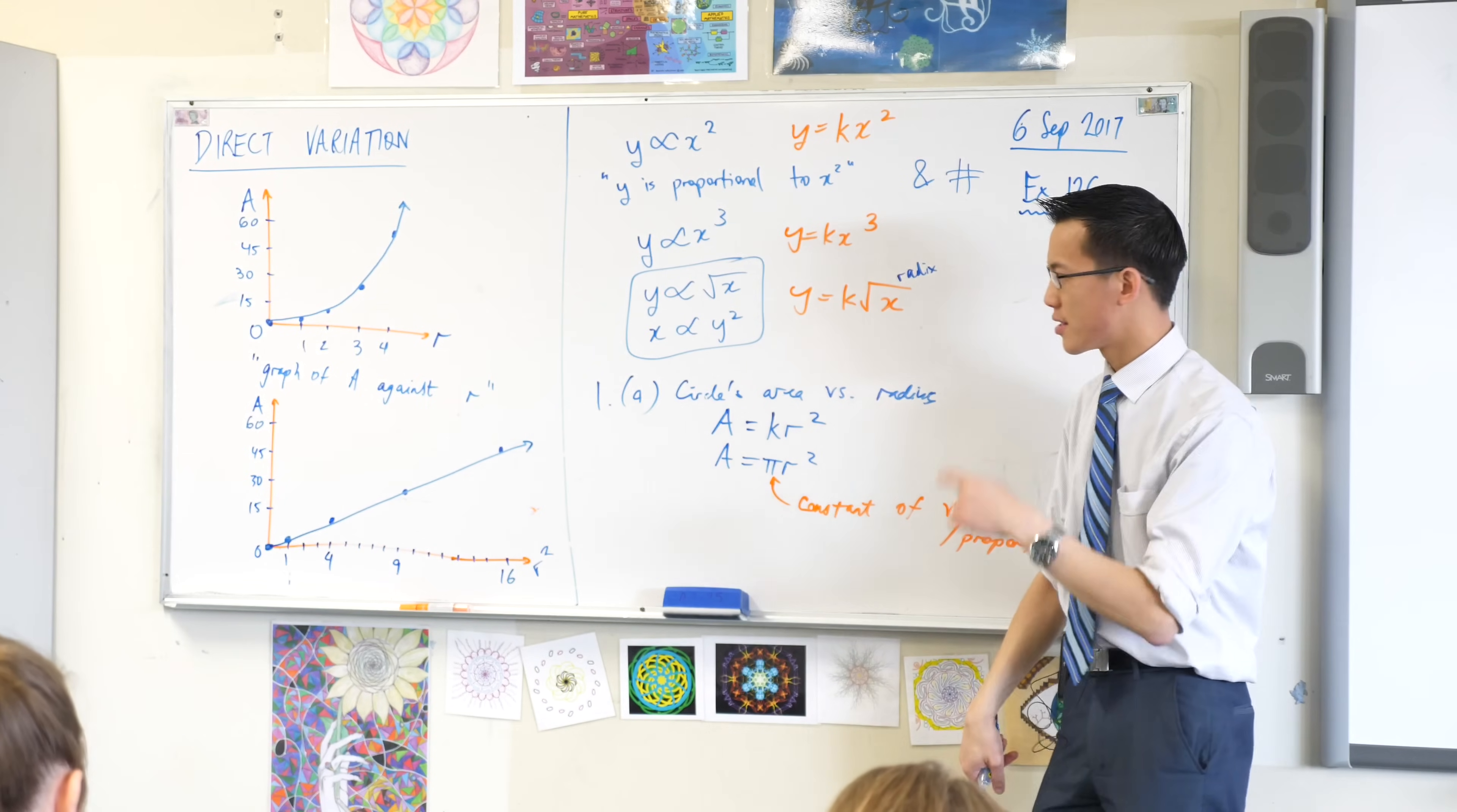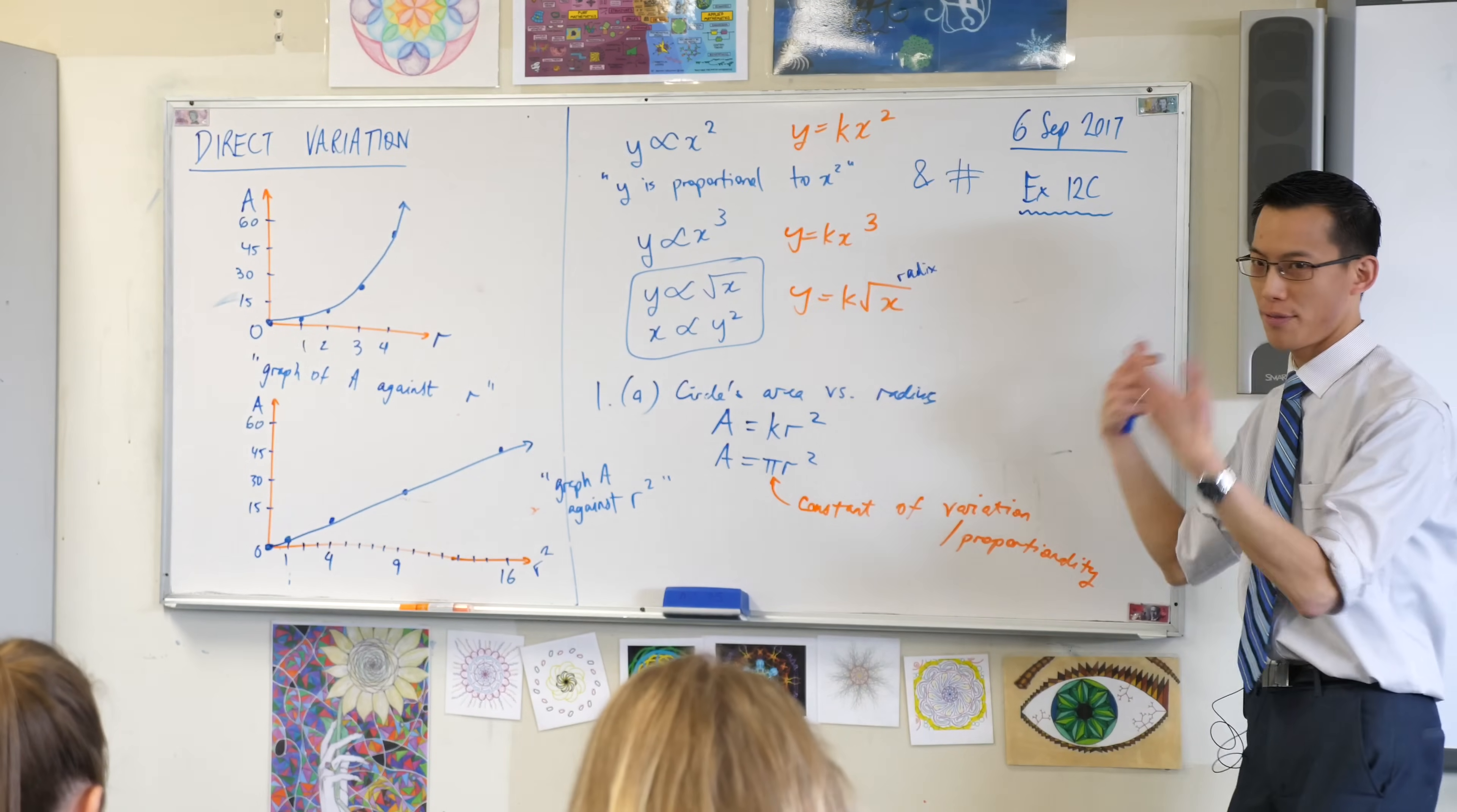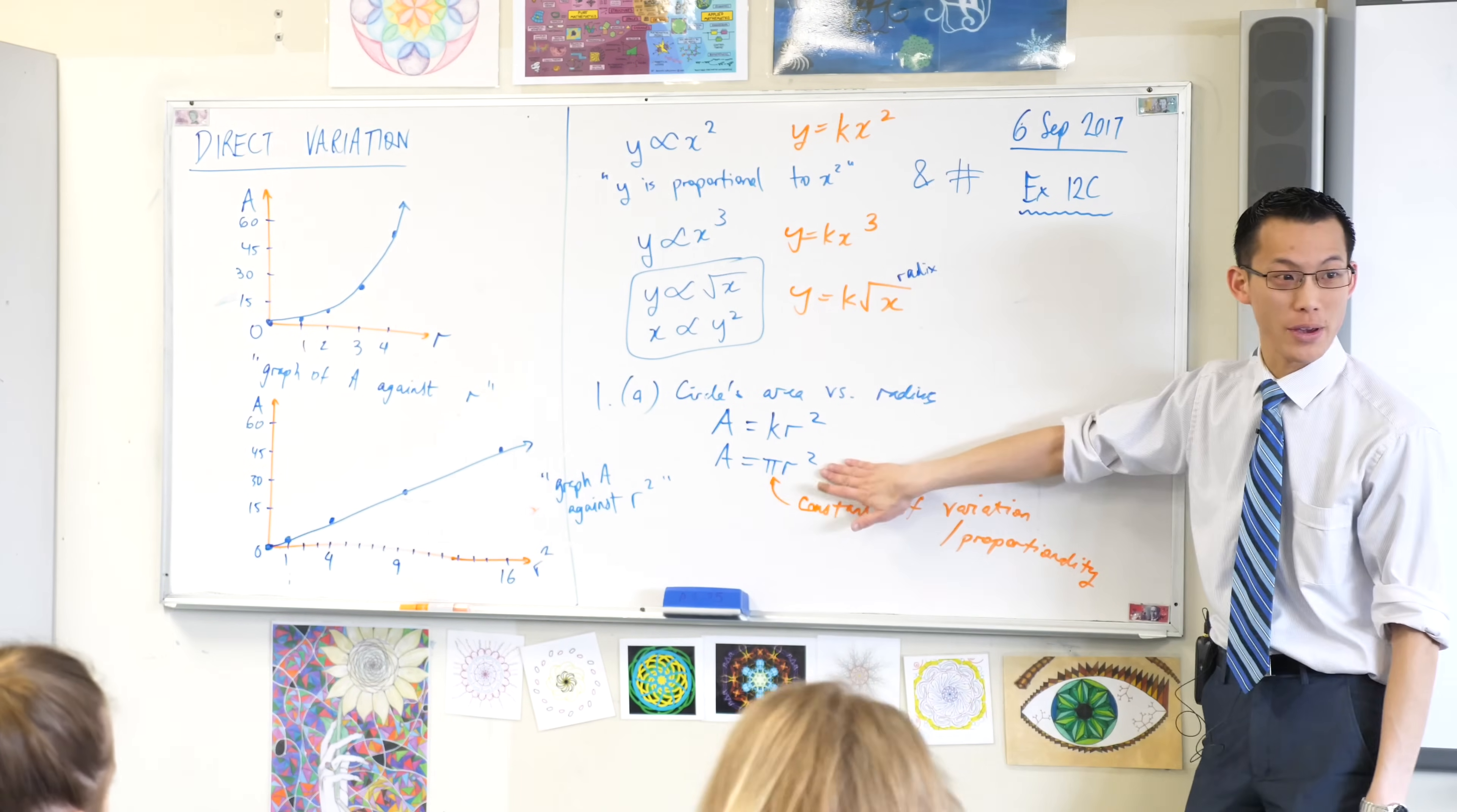So what I can do is, I can graph a against r, or alternatively, I can graph a against r squared. I could graph it against r cubed, or to the power of 4, or anything I really like. If I graph a against something that it's directly proportional to, you will always get a straight line.